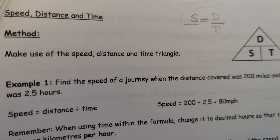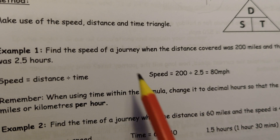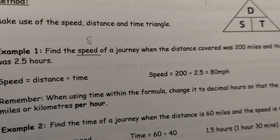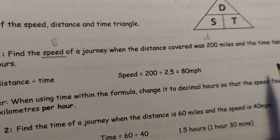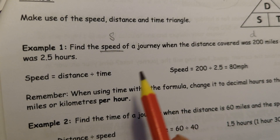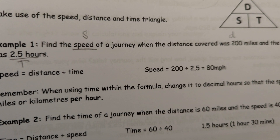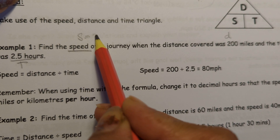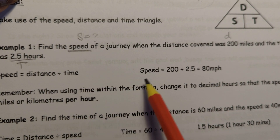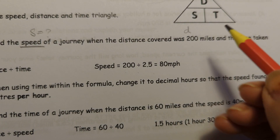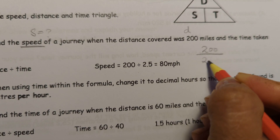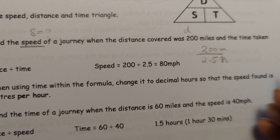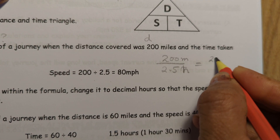In Example 1, we have to find the speed of a journey. The distance covered was 200 miles and the time taken was 2.5 hours. We write speed as a question mark. Using the formula speed equals distance divided by time, we get 200 divided by 2.5. The unit will be miles per hour.